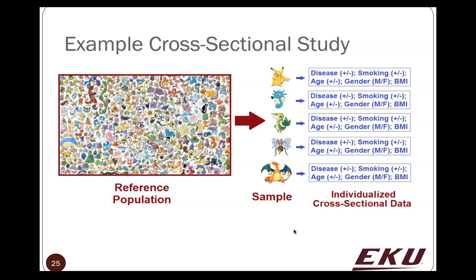When we do our studies, we have to base them on some sort of reference population. In an ideal setting for a cross-sectional study, we will randomly obtain our sample from a reference population. There are a variety of different methods to randomly sample a large population, and from each individual you then get their individual-level information.